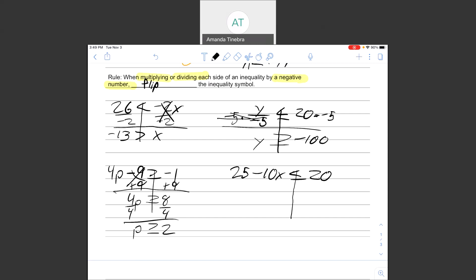So again, working through this carefully. The first thing I'm doing is subtracting 25 on each side. Remember, I want to get that x by itself.